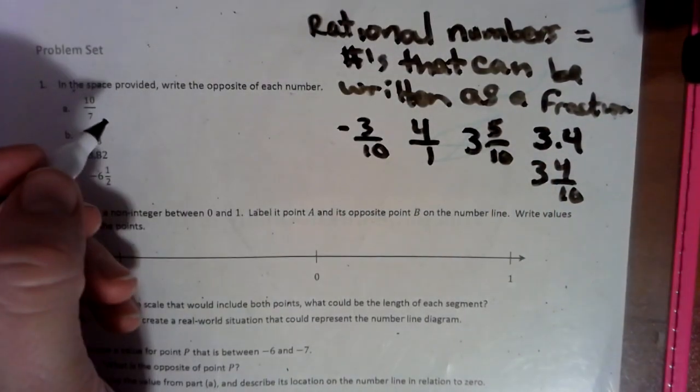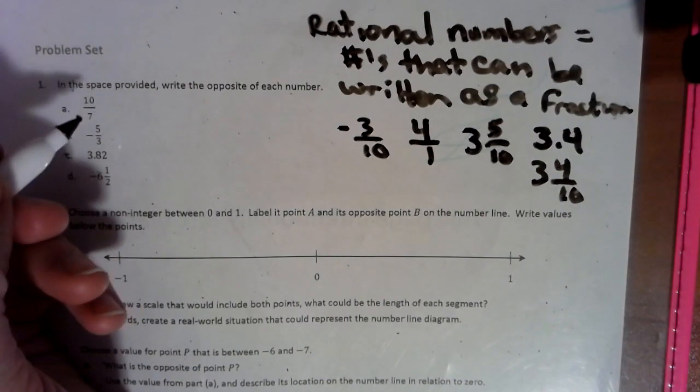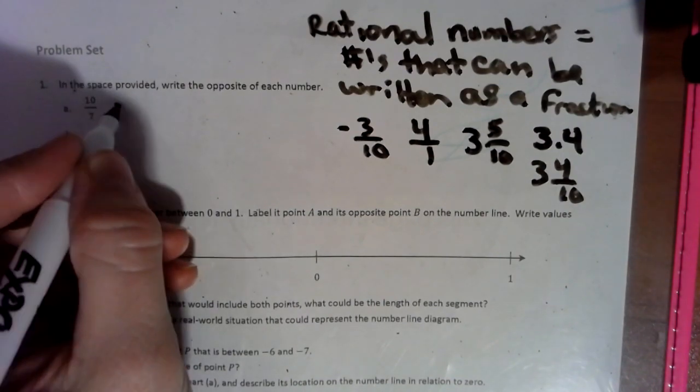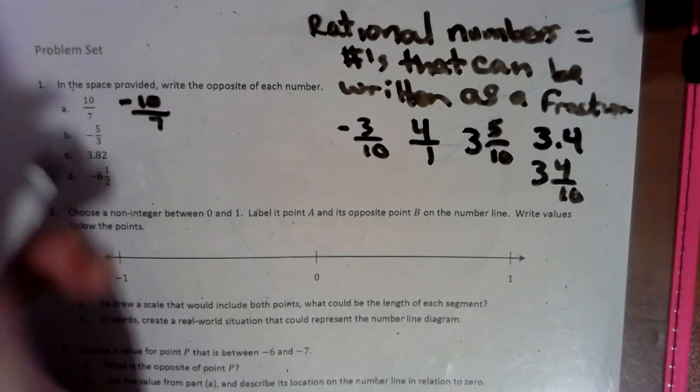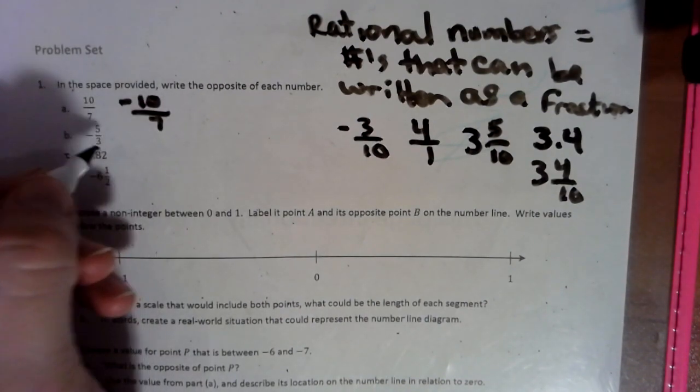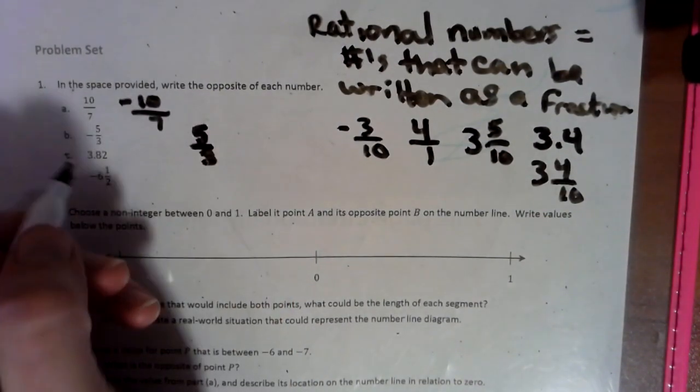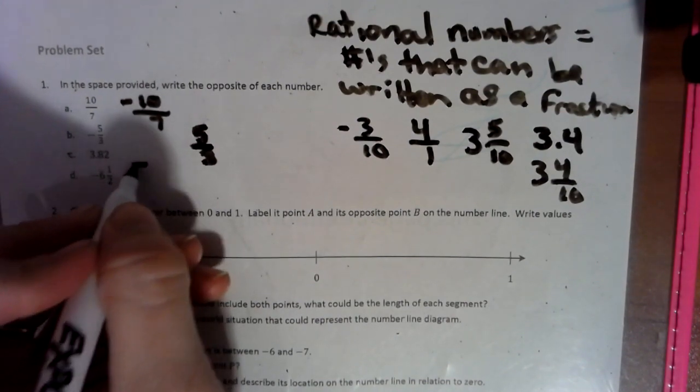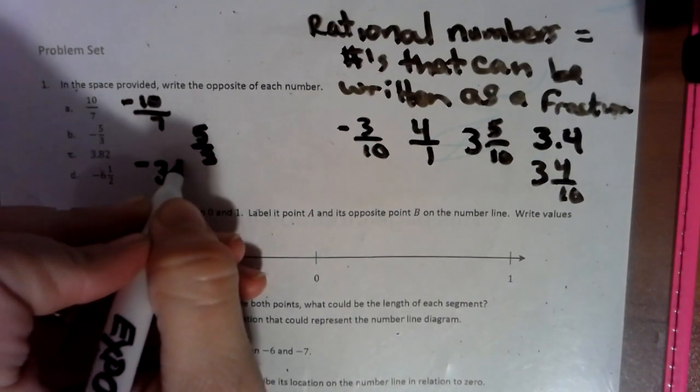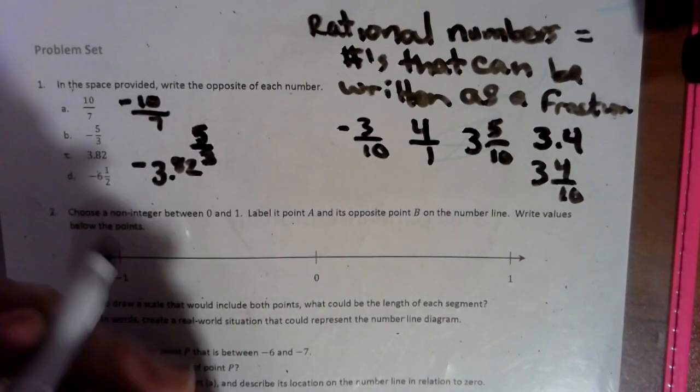So it's very simple. We see a number, we do its opposite. So if we see ten sevenths, that's a positive ten sevenths, so its opposite is negative ten over seven. And if we see a negative five thirds, we're going to look at it as a positive five thirds. And we have three and eighty-two hundredths, so that would be negative three and eighty-two hundredths as a decimal.